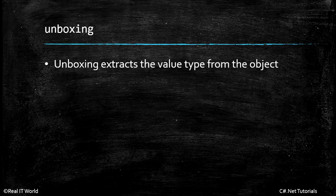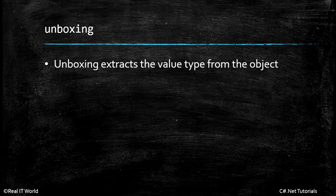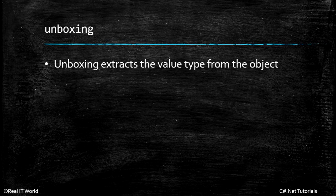Unboxing is the reverse process of boxing. Boxing is storing a value type inside object; unboxing is getting it back from object. Unboxing extracts the value type from object. For example, if we stored an integer inside object and we need to get that back as an integer value, that process is called unboxing.